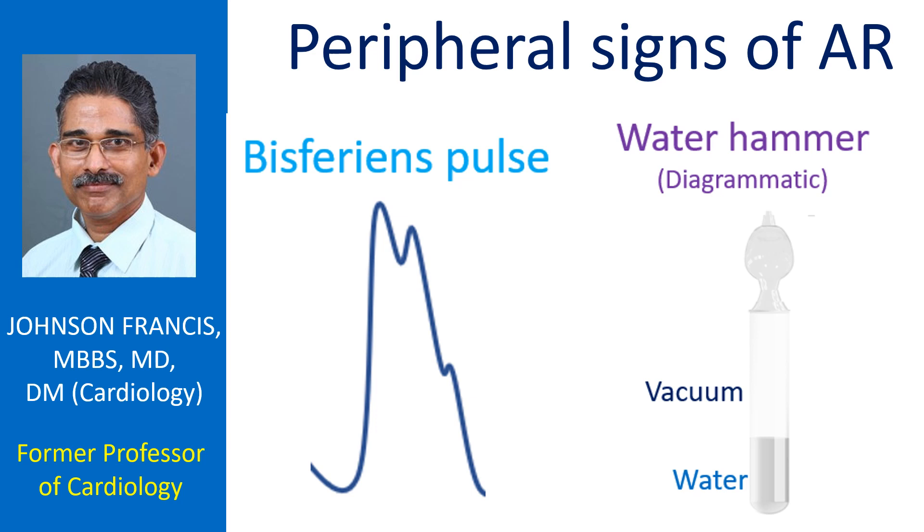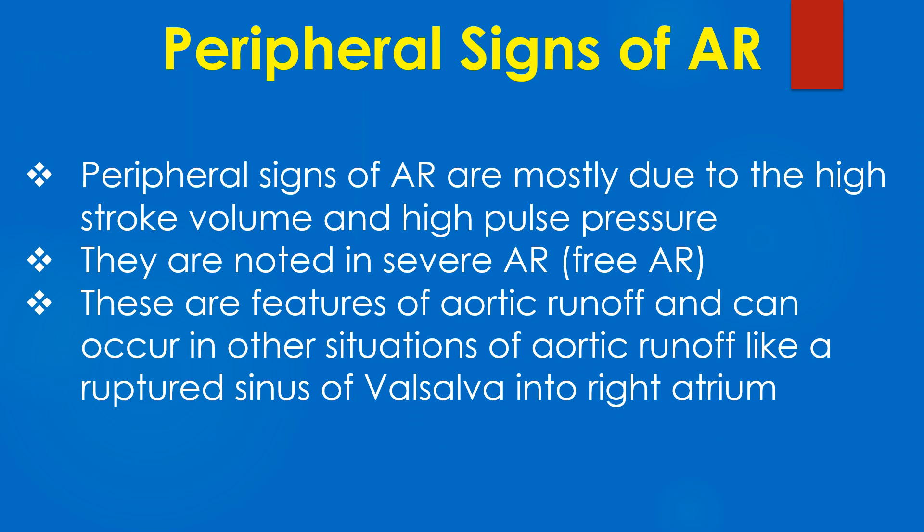Peripheral signs of aortic regurgitation are mostly due to the high stroke volume and high pulse pressure. They are noted in severe AR. These are features of aortic runoff and can occur in other situations of aortic runoff, such as ruptured sinus of Valsalva into the right atrium.